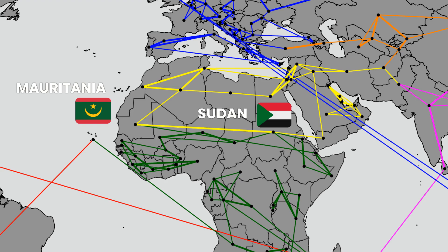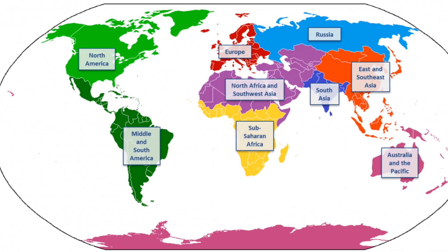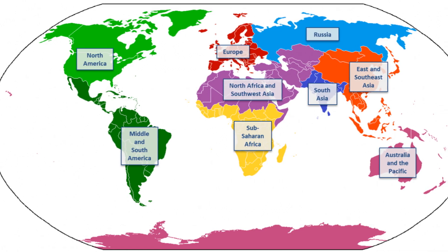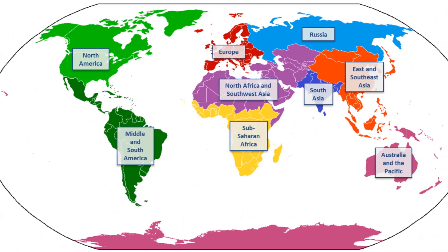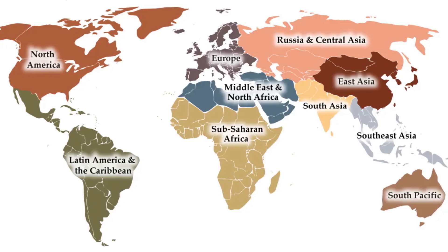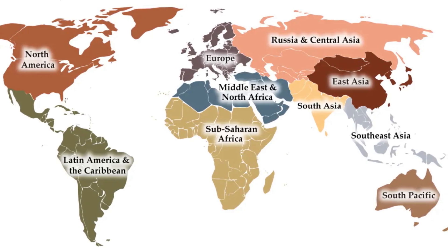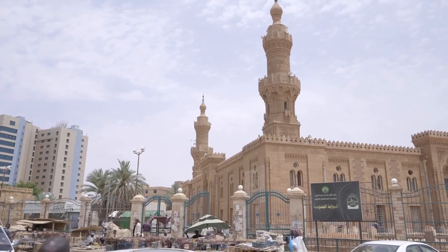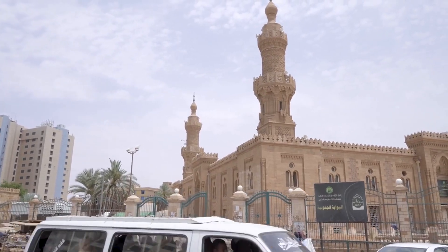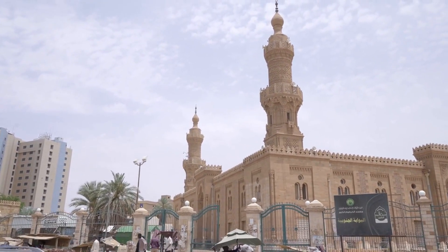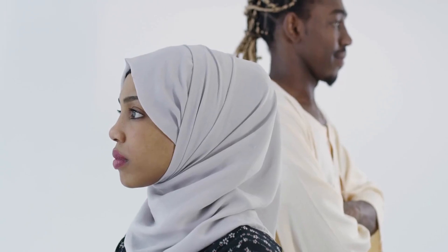The Sahel region of Africa is another place that has traits of two different regions. Some geographers consider Sudan and Mauritania to be part of the Middle East and North Africa, while others consider them to be part of sub-Saharan Africa. On one hand, these nations are predominantly Muslim countries that primarily speak Arabic and are mostly desert. On the other hand, the people in these countries have more sub-Saharan African ancestry.